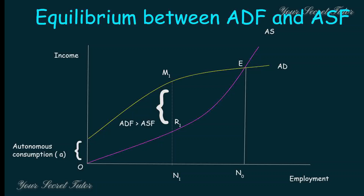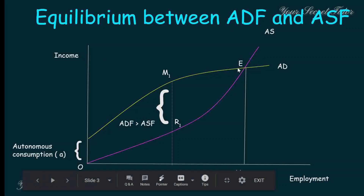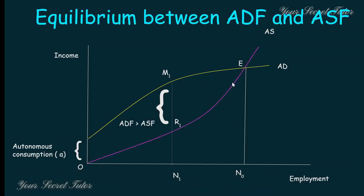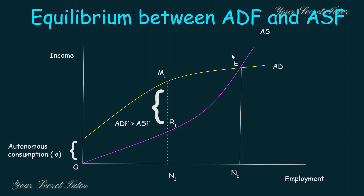Because there is demand at that point, producers are ready to produce and as they produce, they are getting profit. However, beyond the equilibrium point, demand becomes less than supply. So producers will reduce production and move back toward the equilibrium point.